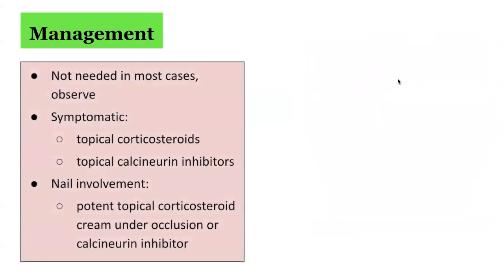What are the management options? In most cases, active treatment is not required and observation is usually sufficient. If there are significant symptoms bothering the patient, then treatment options may include topical corticosteroids and topical calcineurin inhibitors. For significant nail involvement by lichen striatus, treatment options include potent topical corticosteroid creams under occlusion or calcineurin inhibitors.